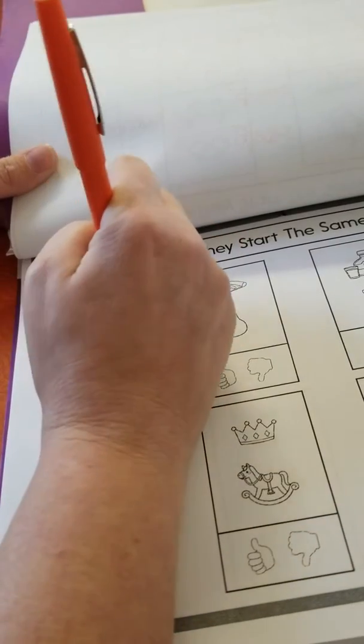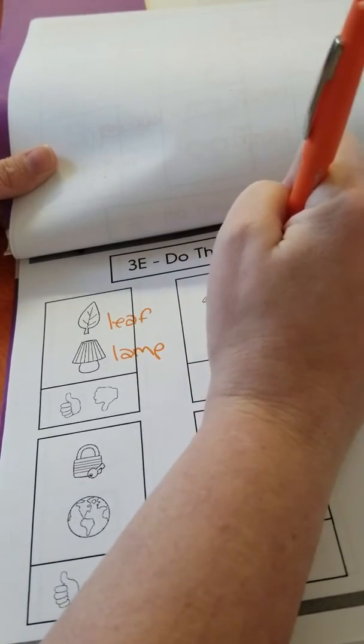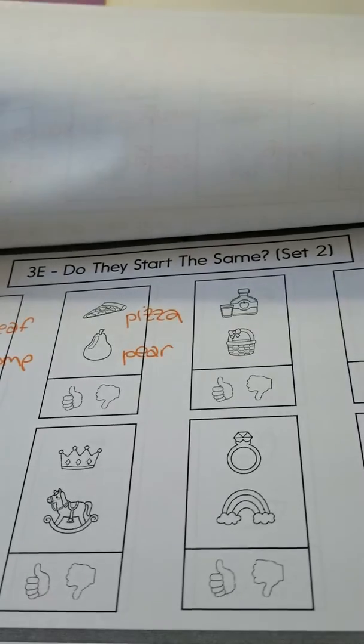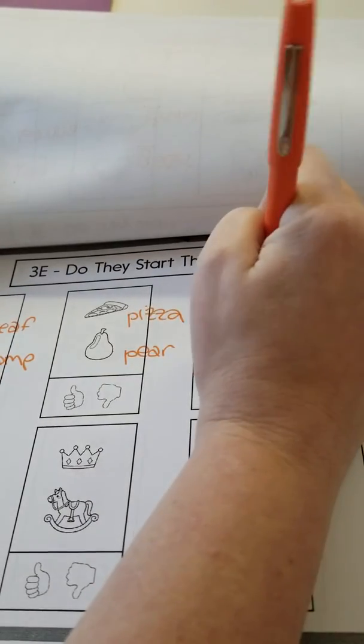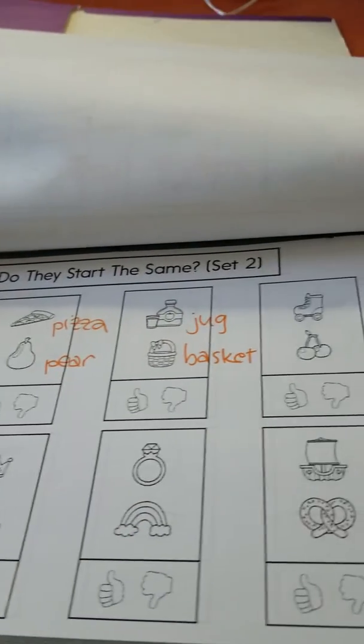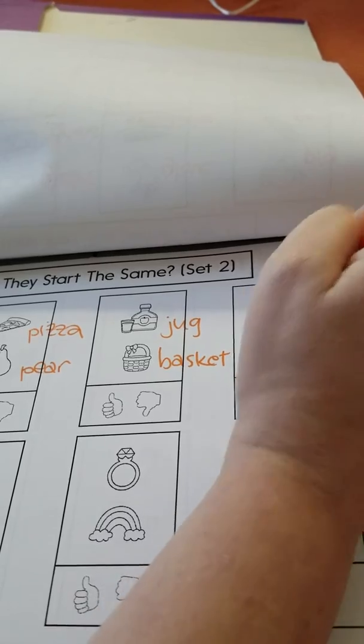So we have leaf and lamp, pizza and pear. Here we have jug and basket. And we have skate and cherry.